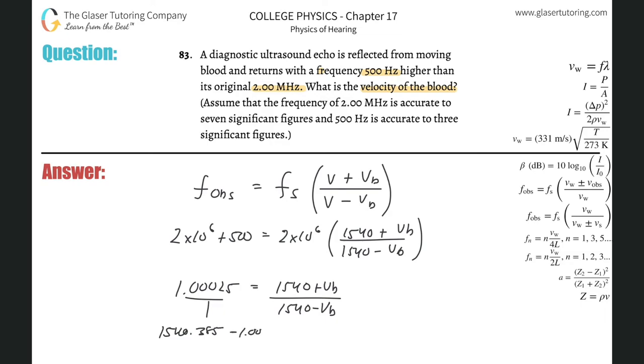Combine like terms, bring terms to appropriate sides and divide. Negative 1540 divided by (1 plus 1.00025) gives us the velocity of the blood equal to 0.192 meters per second.